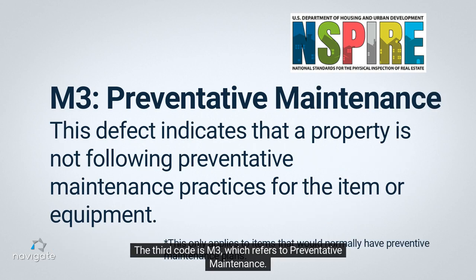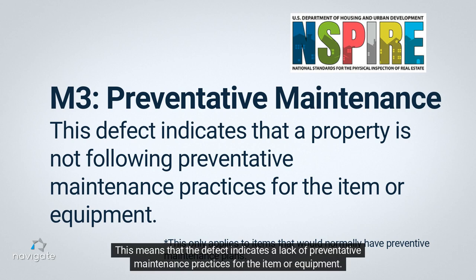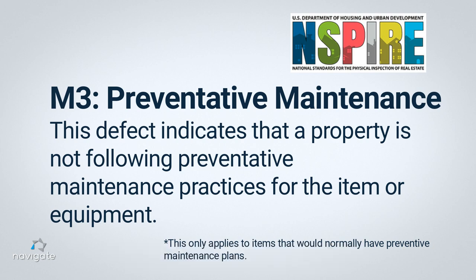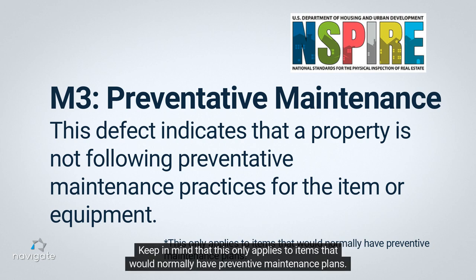The third code is M3, which refers to Preventative Maintenance. This means that the defect indicates a lack of preventative maintenance practices for the item or equipment. Keep in mind that this only applies to items that would normally have preventive maintenance plans.